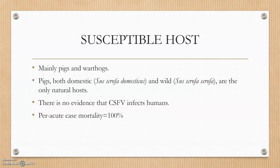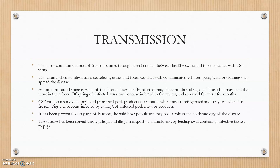Susceptible hosts are mainly pigs and warthogs. Pigs, both domestic and wild, are susceptible. In the peracute case, the mortality is 100%. The most common method of transmission is direct contact between healthy swine and infected swine. The infected swine's saliva, nasal secretions, urine, and faeces also contain high amounts of virus, and whenever these materials come into contact with healthy pigs, they get the disease.